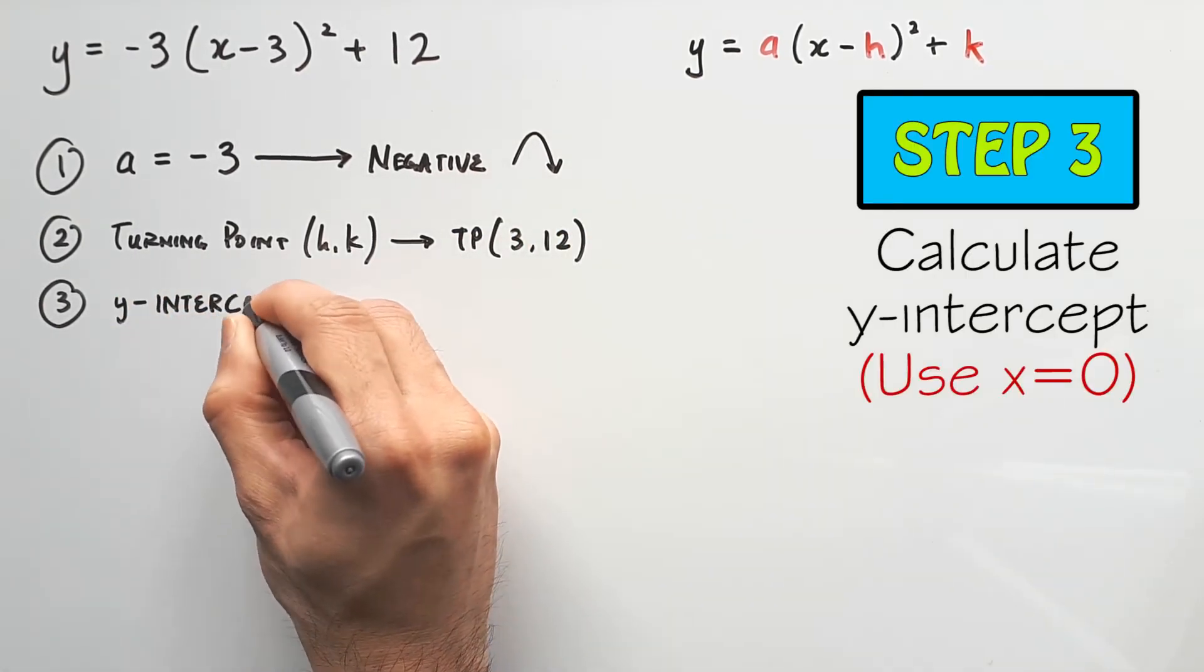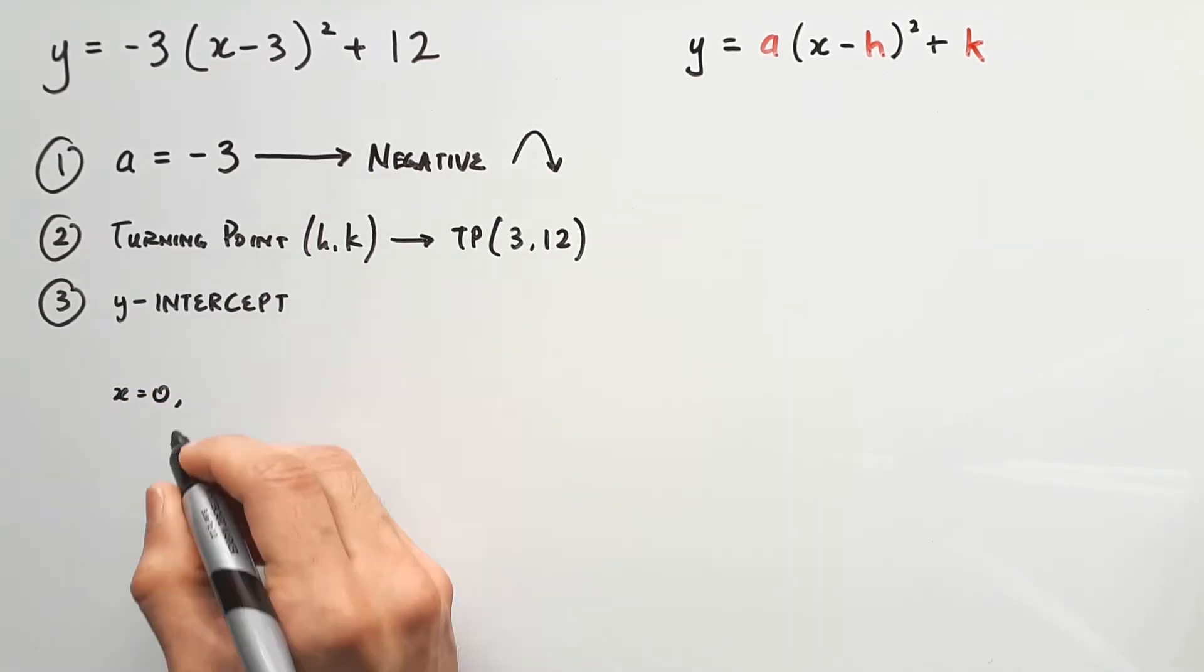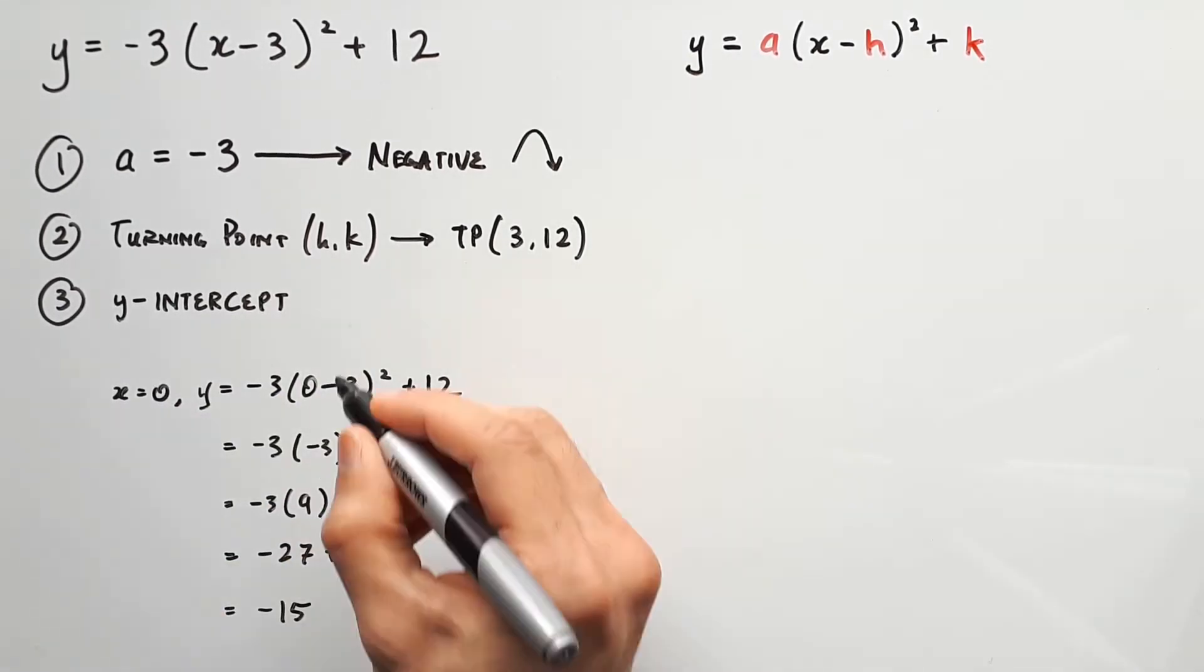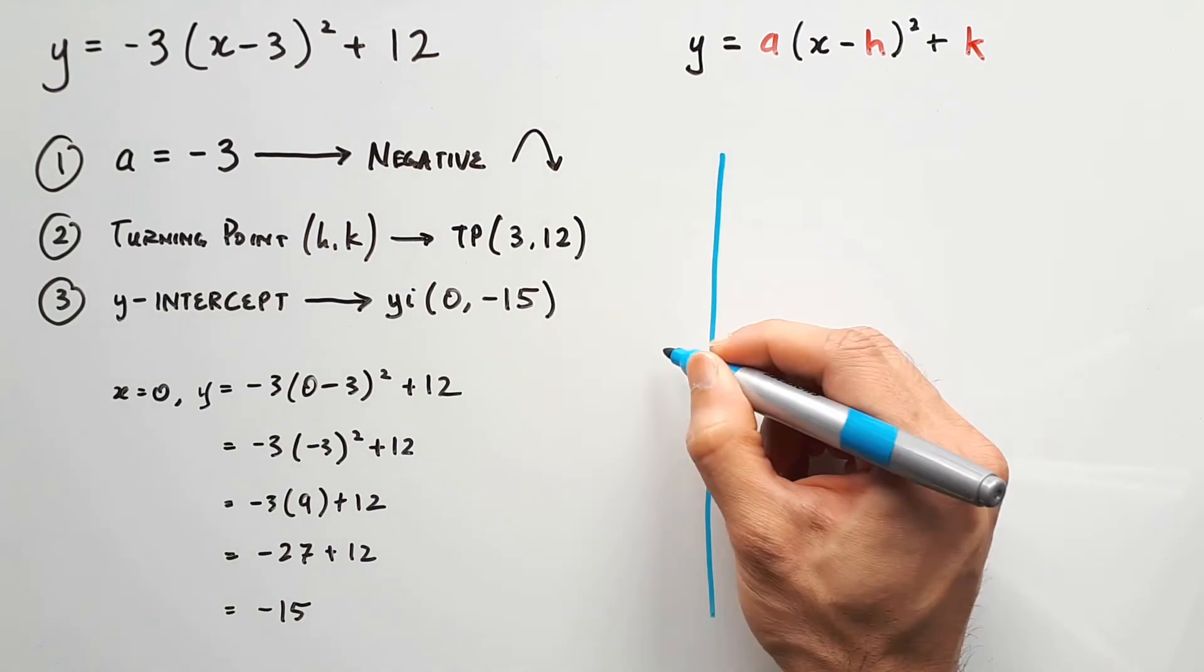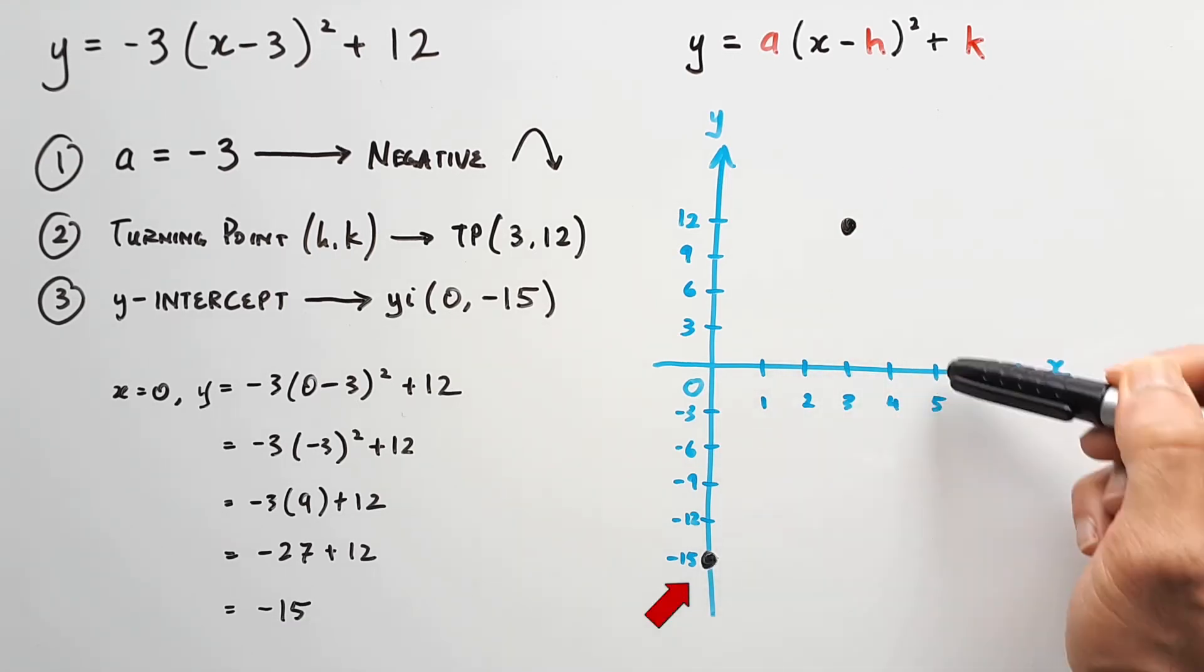Step 3, calculate the y-intercept. Since the intercept sits on the y-axis, its coordinate will have an x value of 0. So sub x with 0 in the equation and find the y value. And our y-intercept is found to be at negative 15. With this, there's already enough information to do a rough sketch of the parabola, because we know where it turns, and the y-intercept guides the overall shape.